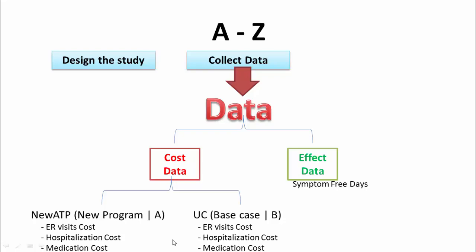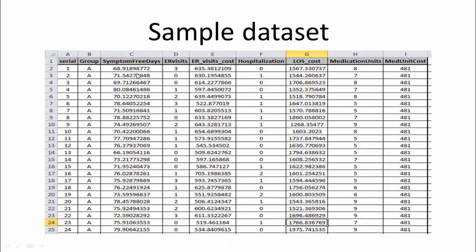And this is a sample dataset that is simulated using the code for simulation of the dataset. The link to this script is in the video description. Again, it's a very simple dataset containing the ID of the subject, the group to which the subject is assigned, and symptom-free days during the study period for the subject in question.